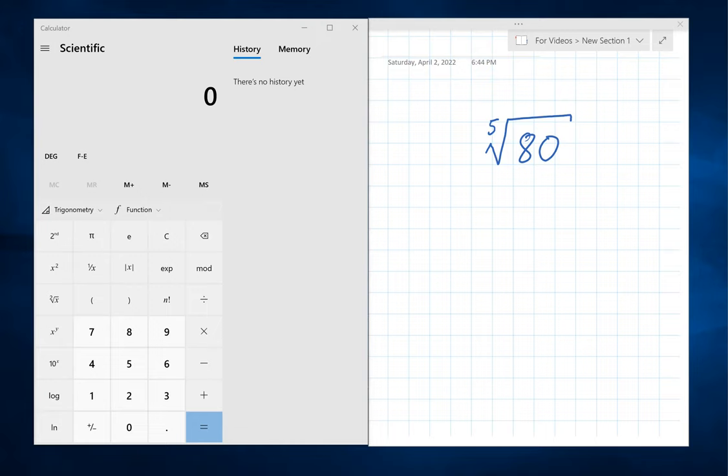For example, let's compute the 5th root of 80. First, you need to make sure you have the scientific version of the Windows calculator. It should say scientific right here.